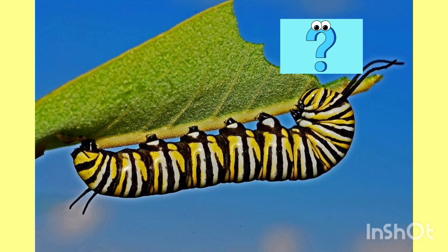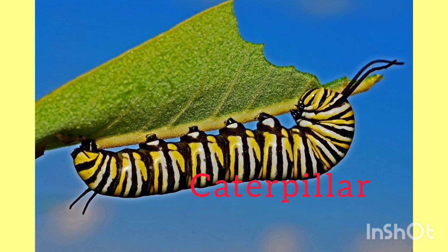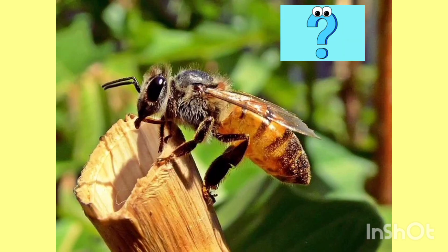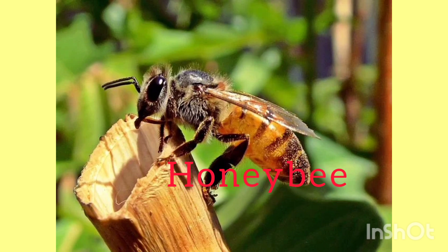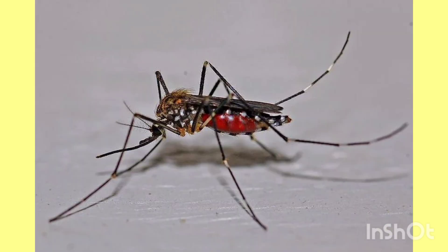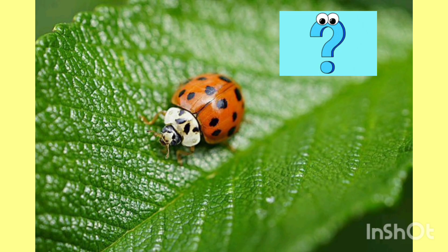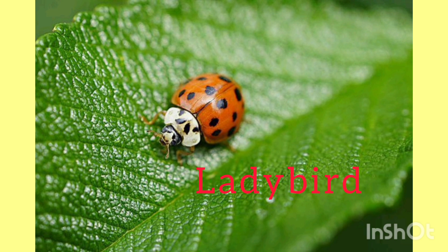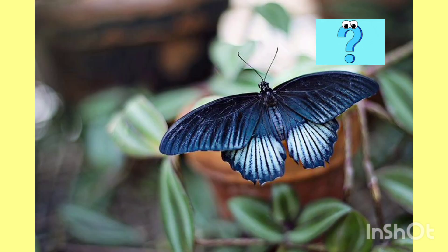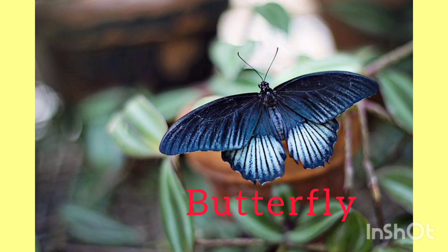Guess kids, what is this? Yes, Caterpillar. And this? This is Honeybee. Guess, what is this? Mosquito. Very good! And this? Yes, Ladybird. This is so beautiful — yes, Butterfly!